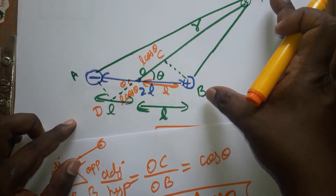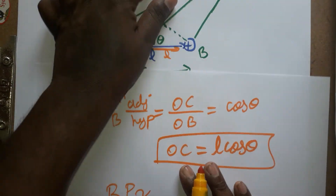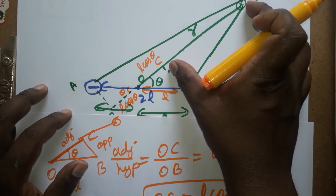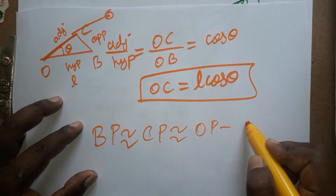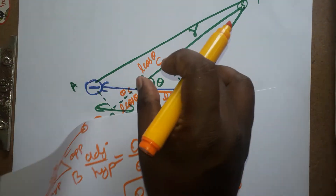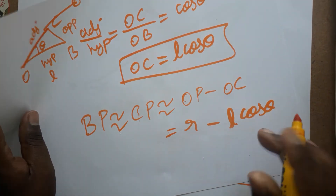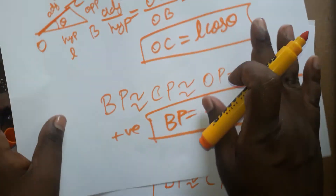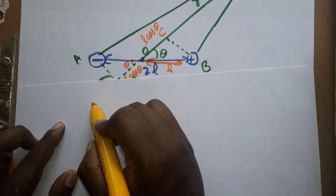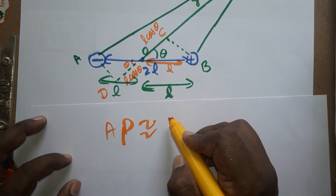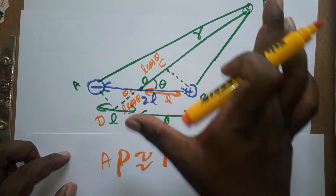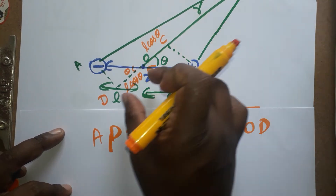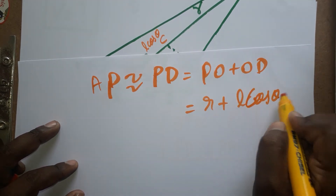Since BP is approximately equal to CP, I can write BP = OP minus OC = r minus l·cos theta. For AP, since AP is approximately equal to PD, and PD = PO plus OD, we get AP = r plus l·cos theta.